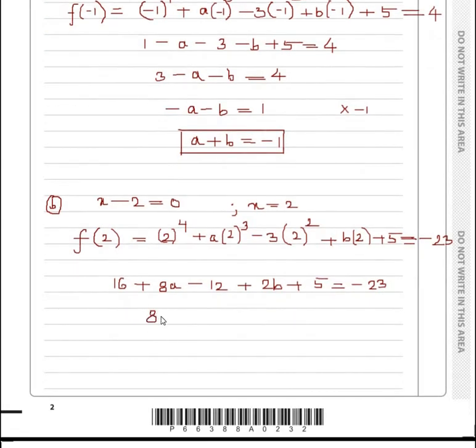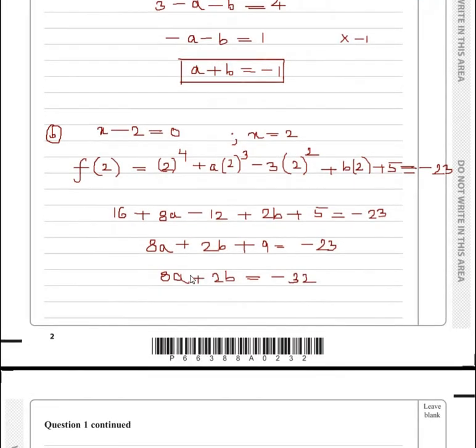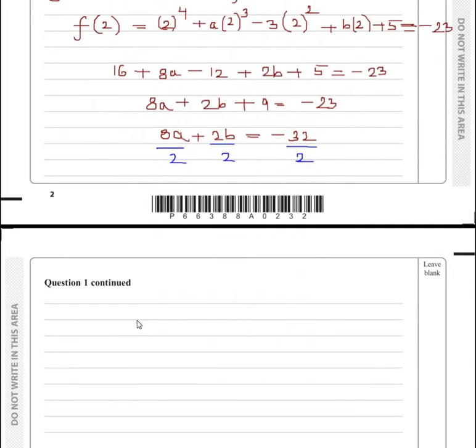So we get 16 + 8a - 12 + 2b + 5 = -23. Hence, we are going to get 8a + 2b, 16 - 12 is 4 and 4 + 5 is 9, so 8a + 2b + 9 = -23. Finally, we get 8a + 2b = -23 - 9, which gives -32. As we can see, all go in the table of 2. So I can simply divide all sides by 2 and get it in a simpler way. We get 4a + b = -16.